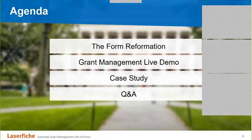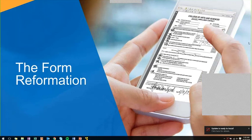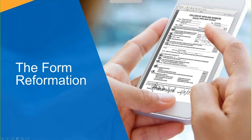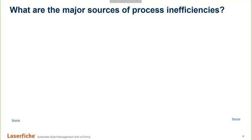The first step in talking about any technology solution is pinpointing the specific business problem you're trying to solve. From our many years of experience working closely with higher education institutions, we've discovered that there are a few main sources of process inefficiencies that we've heard time and time again. The first, of course, is paper.